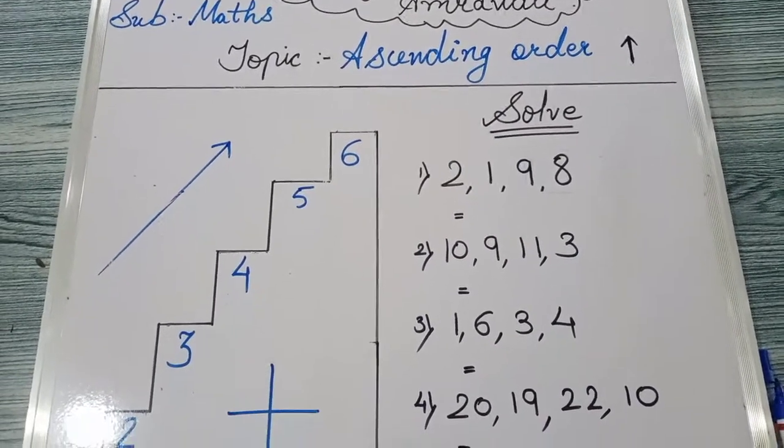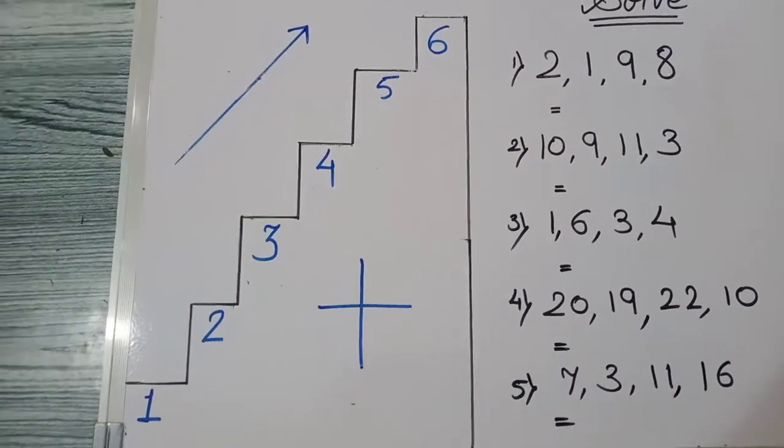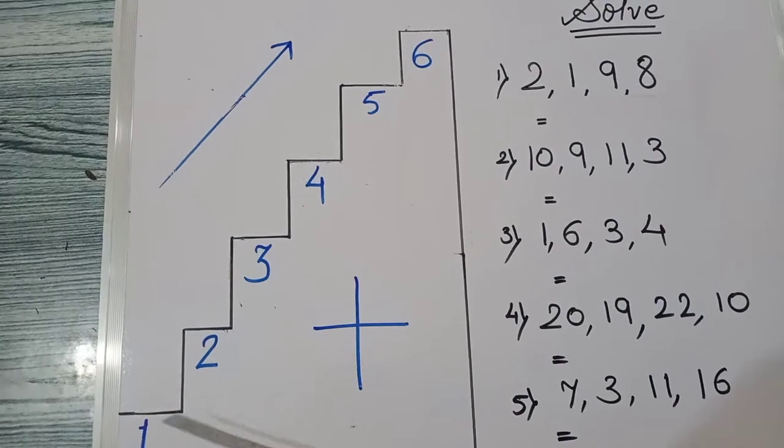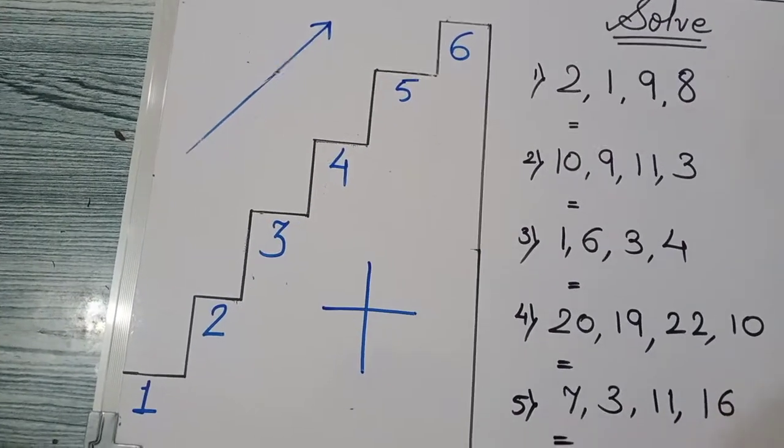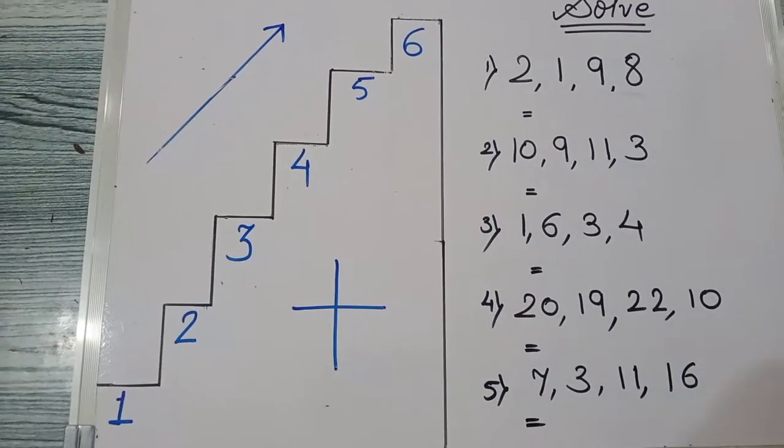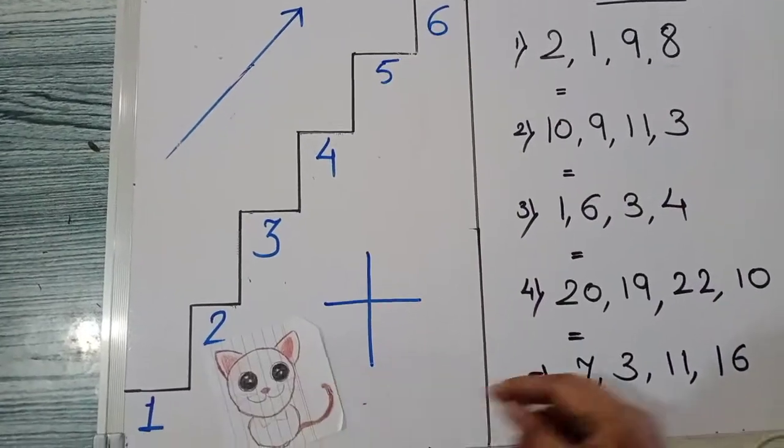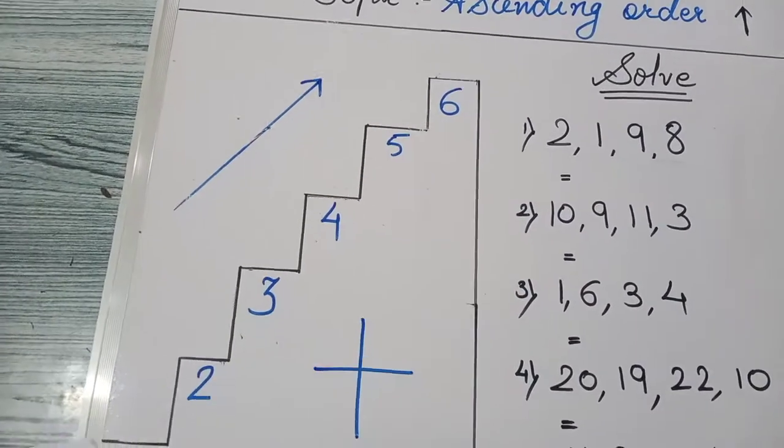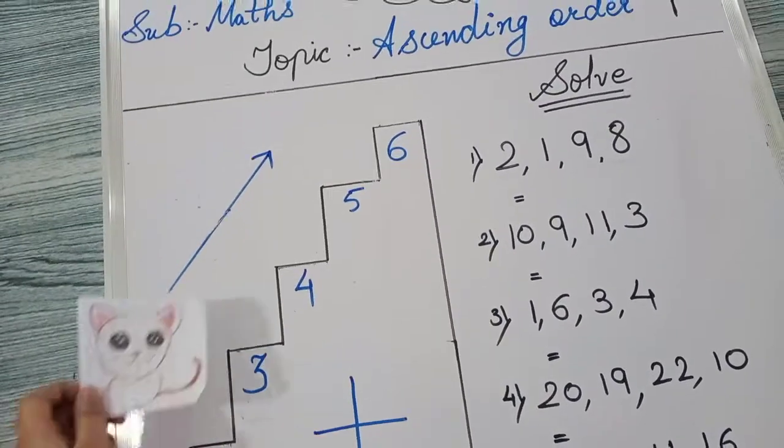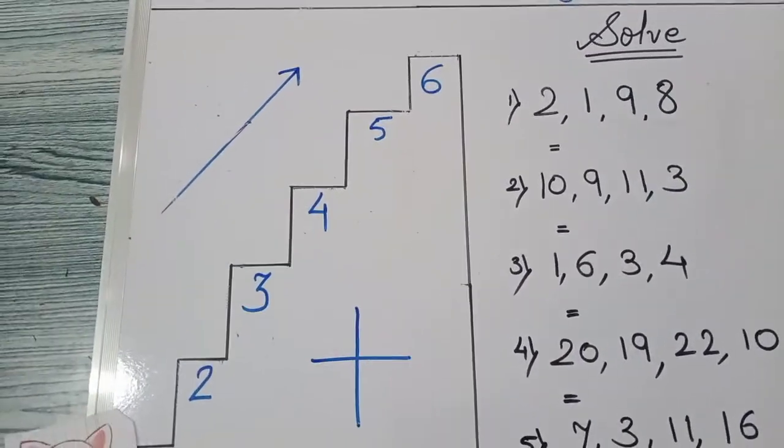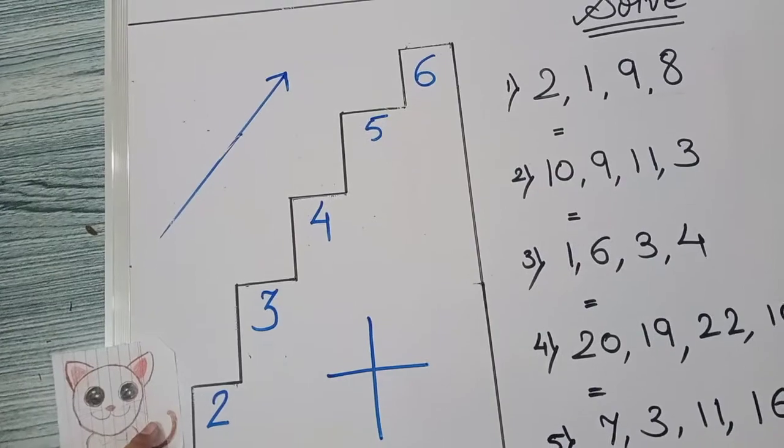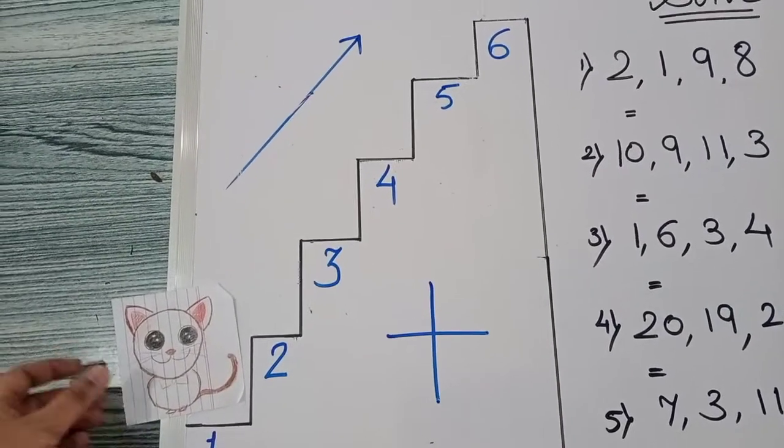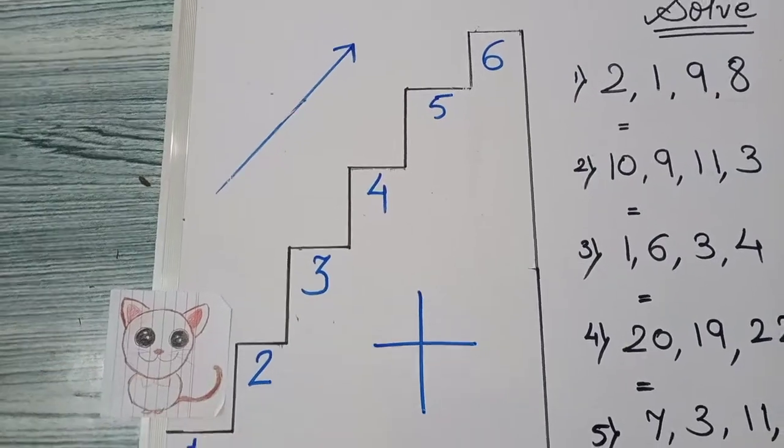For example, let's see this stairs. These are stairs. Stairs means sidiya. So we have a cat. Hamari paas ek cat hai. Look at this cat. So this cat ko five number ki stair par jana hai. So this cat will jump. This cat kya karegi? Jump karegi. This cat is on first stair, cd par hai.